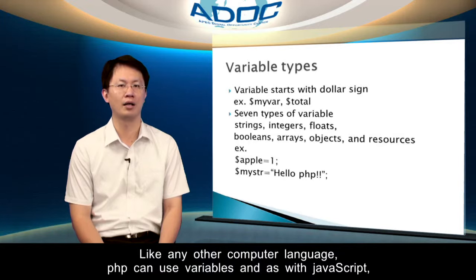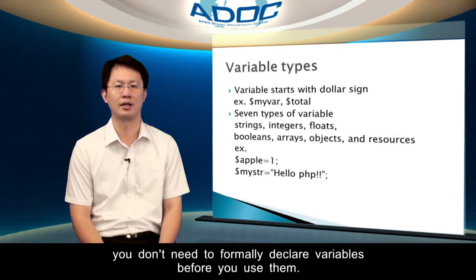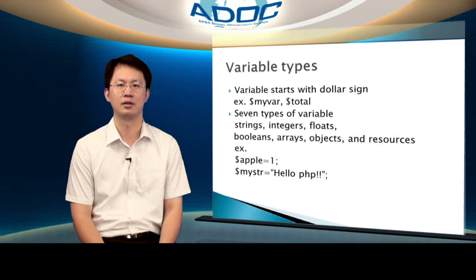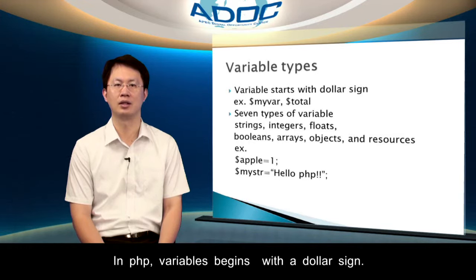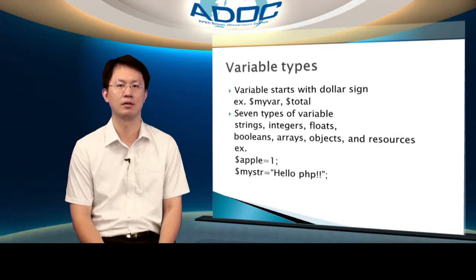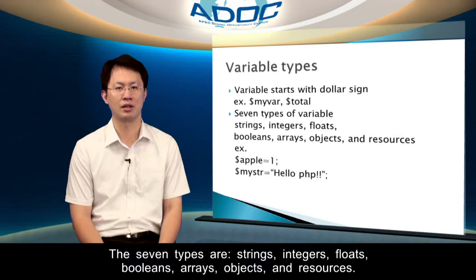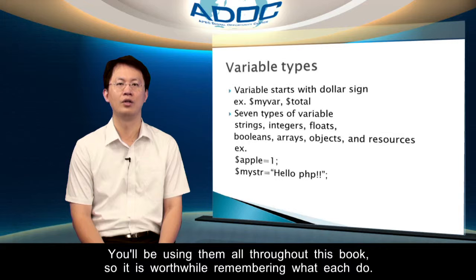Like any other computer language, PHP can use variables. And as with JavaScript, you don't need to formally declare variables before you use them. In PHP, variables begin with a dollar sign. PHP has seven types of variables, and all but one holds a specific class of information. The seven types are strings, integers, floats, booleans, arrays, objects, and resources. You will be using them all throughout this course, so it is worthwhile remembering what each does.